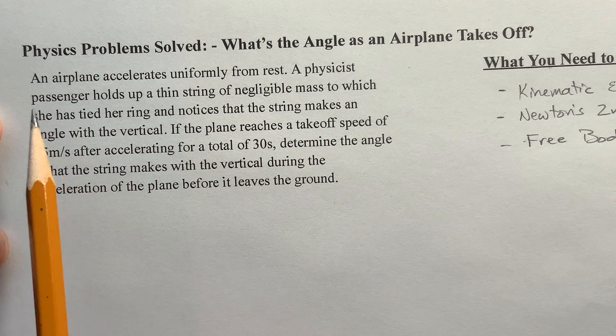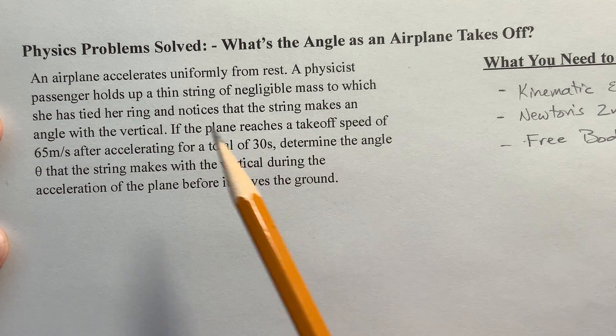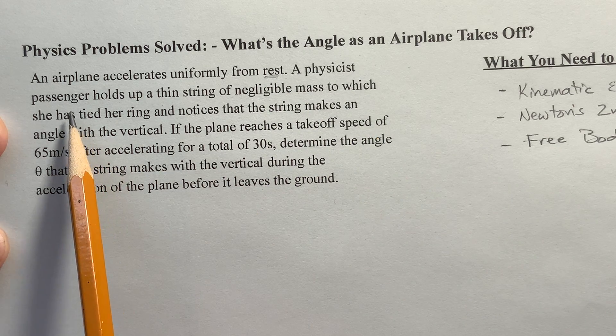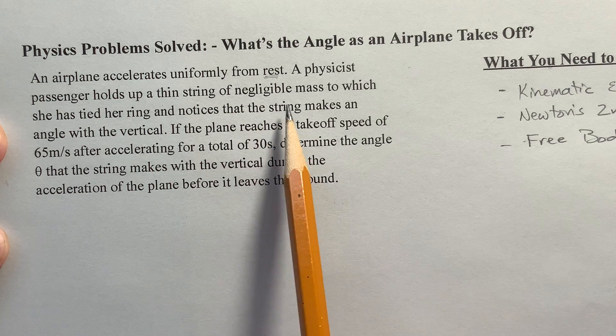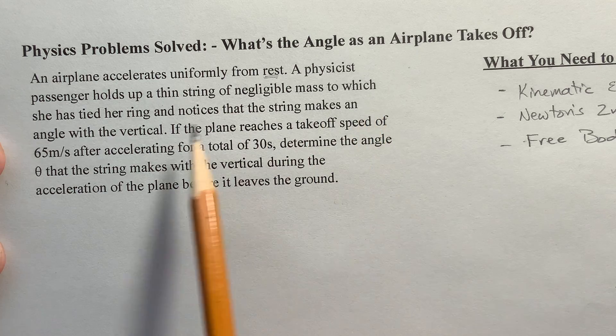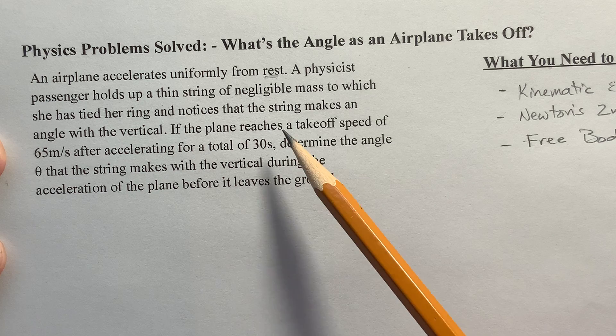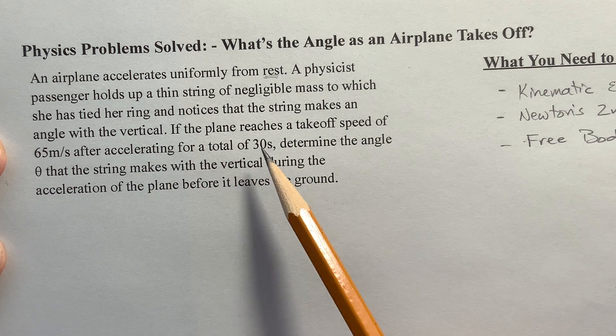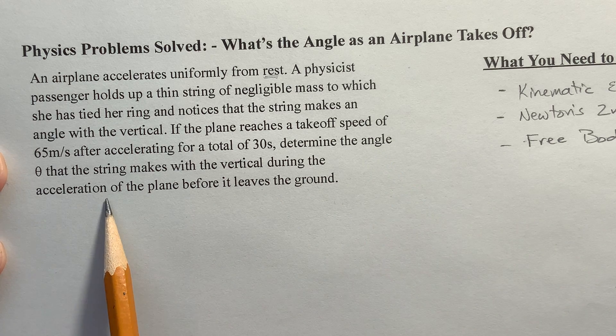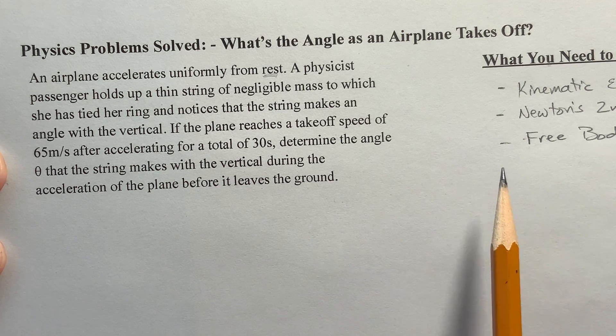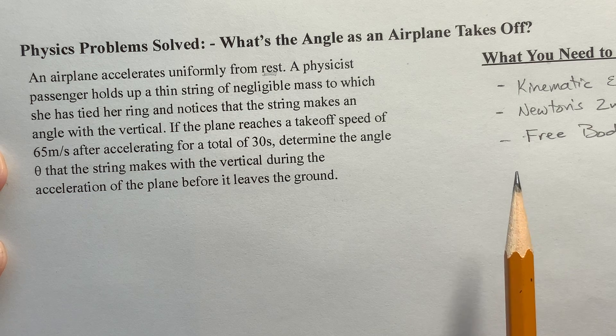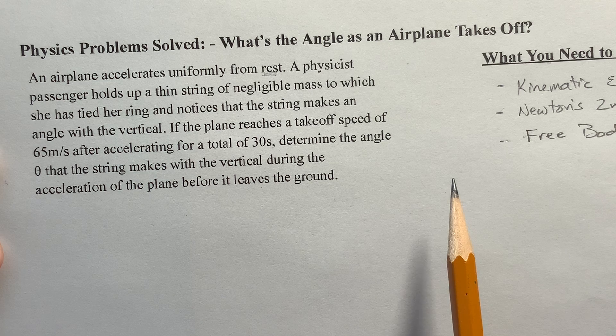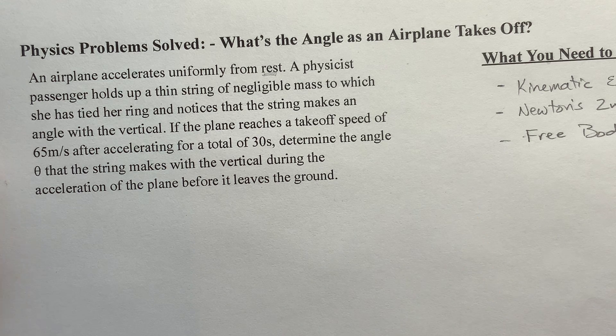So we've got an airplane and it accelerates uniformly from rest. A physicist passenger holds up a thin string of negligible mass to which she has tied her ring and notices that the string makes an angle with the vertical. If the plane reaches a takeoff speed of 65 meters per second after accelerating for a total of 30 seconds, determine the angle theta that the string makes with the vertical during the acceleration of the plane before it leaves the ground.